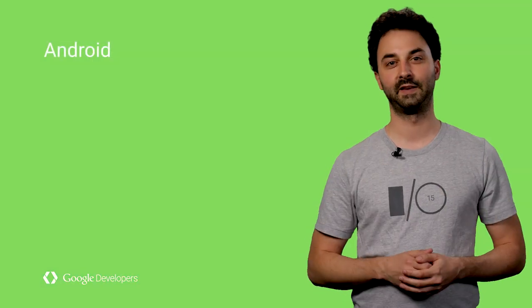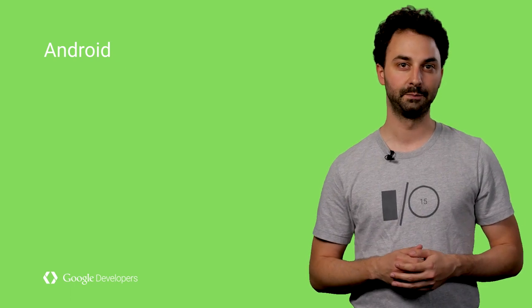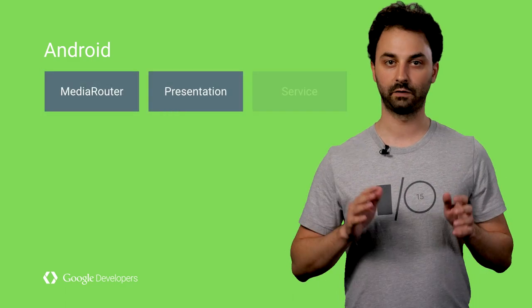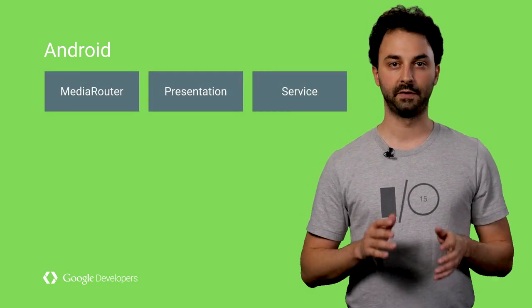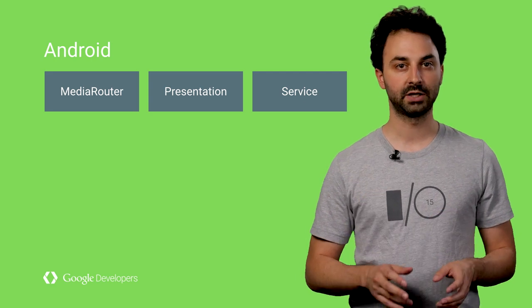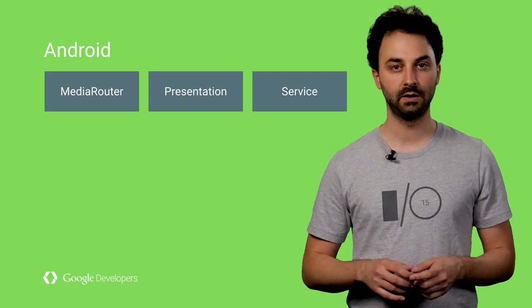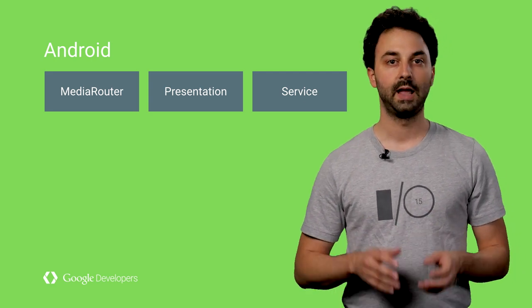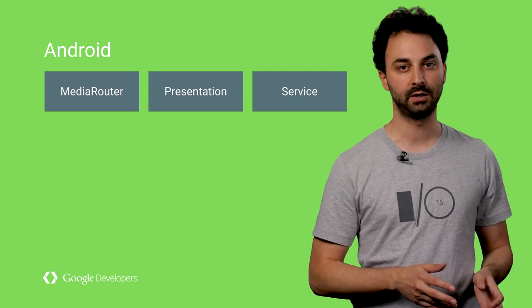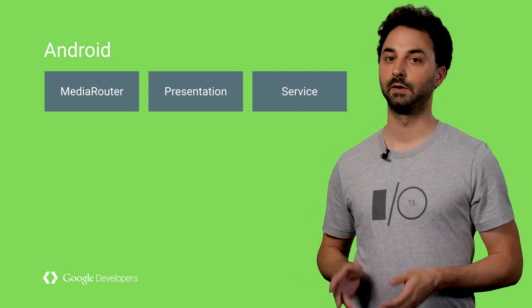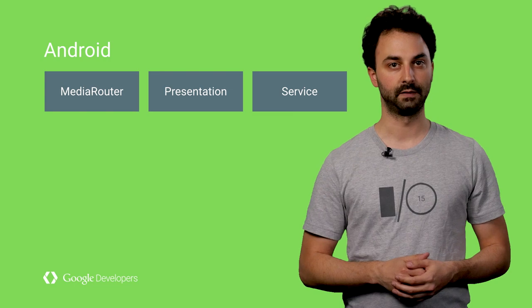But enough about design. Let's go over the Android APIs. On Android, Remote Display combines and extends the Media Router, Presentation, and Service APIs. You'll use Media Router for device discovery, Presentation as the container for the first screen content, and Service components to separate the lifecycle of the presentation from that of your activity.